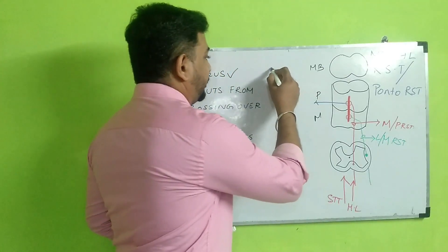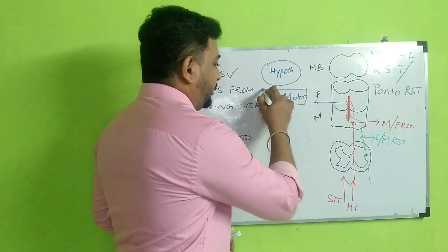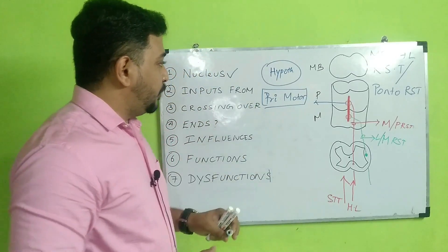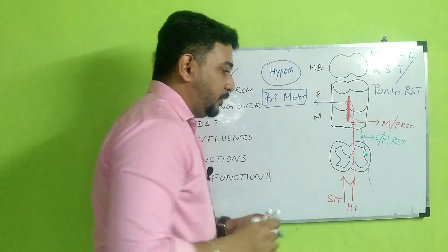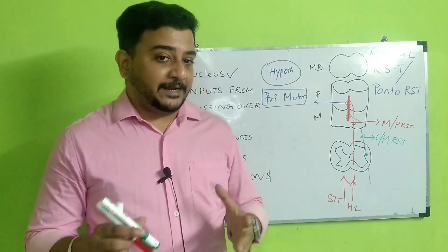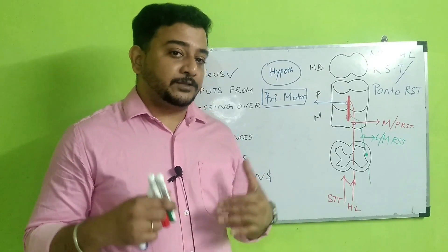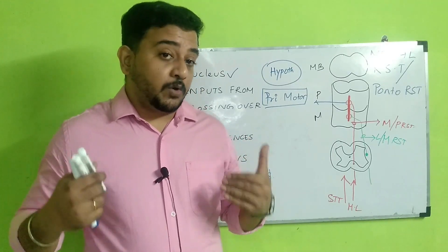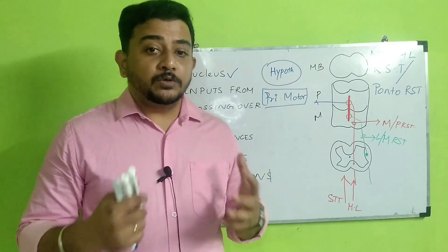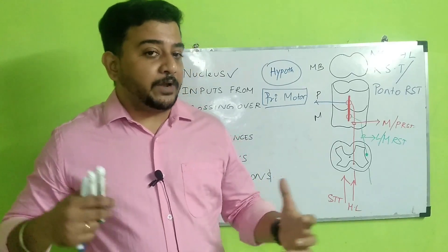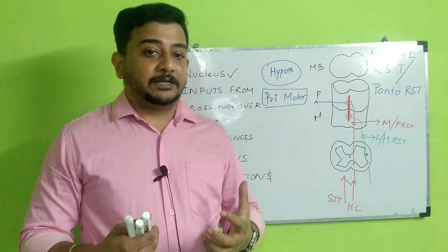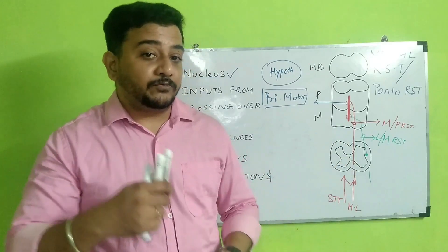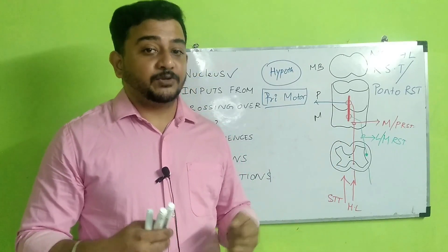The reticulospinal tract also receives information from the hypothalamus and from the primary motor cortex — the precentral gyrus. The hypothalamus, being a satiety center, tells you about hunger. For example, if you are walking towards a hotel because you are very hungry, the hypothalamus will send information to the reticulospinal tract saying you need to fasten your gait because your body is deprived of food.